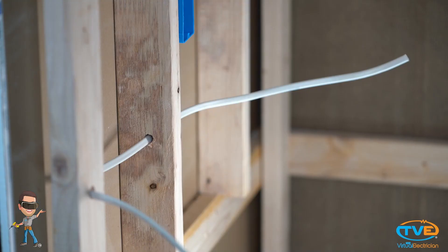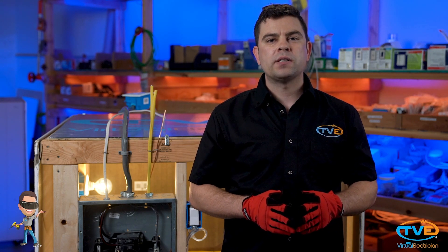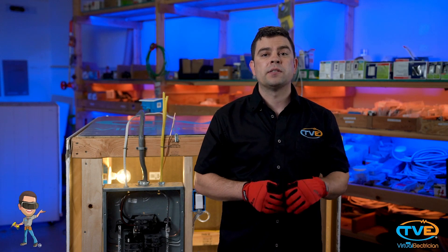Once your box is mounted and your holes are drilled, you are ready to run the wire. If you are adding on to an existing circuit or you are wiring a new circuit, you want to make sure you use the proper wire gauge. Check to see if the circuit you are adding on to has a 15-amp breaker on it or a 20.